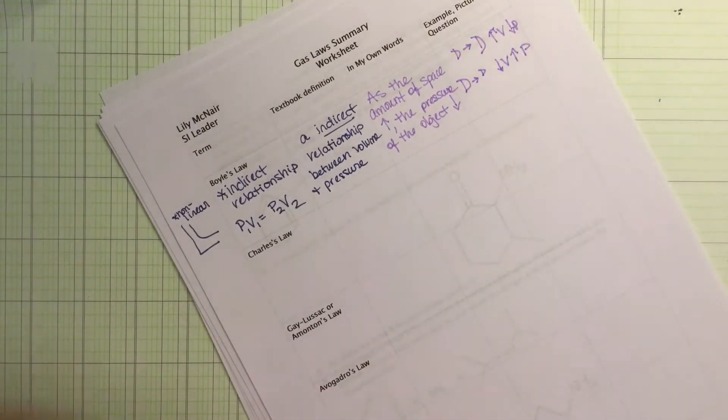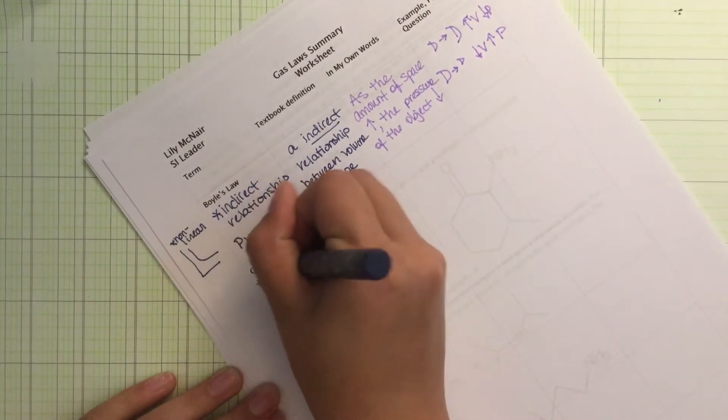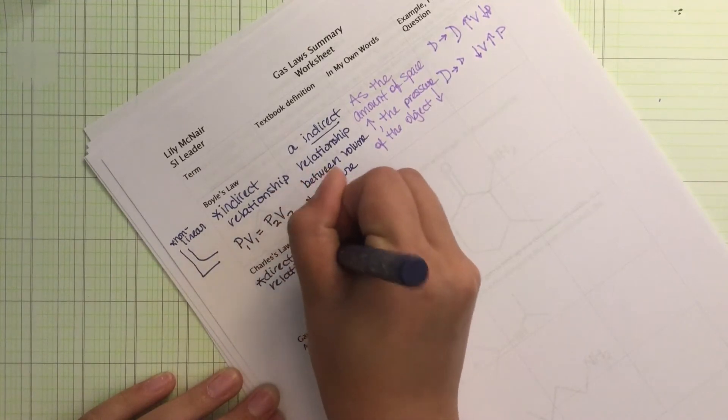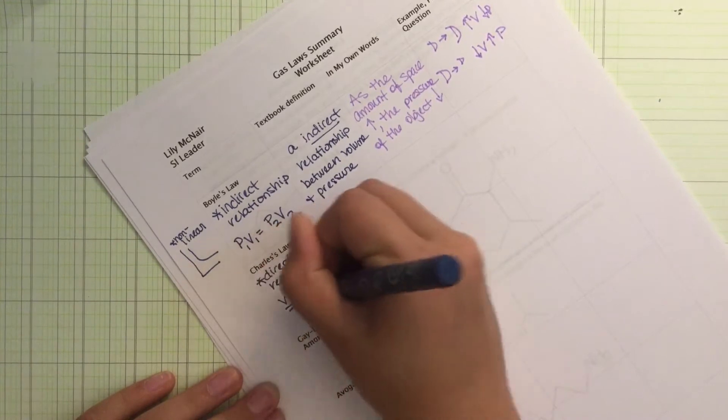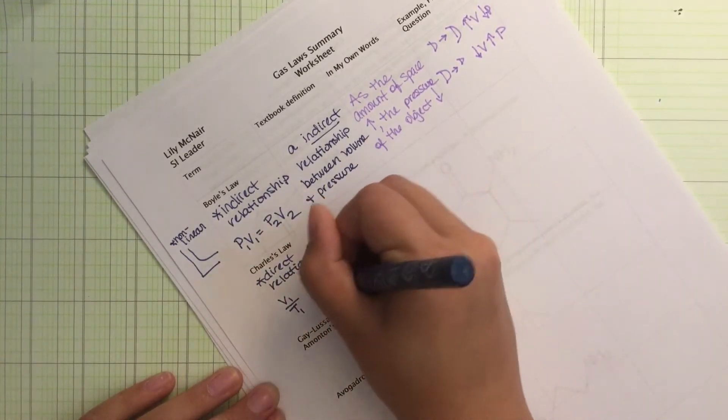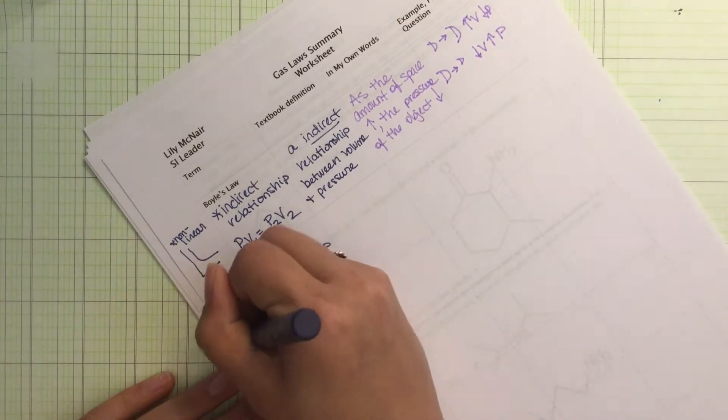Then we have Charles' Law. Charles' Law, we're having a direct relationship. And we're looking at volume and temperature. So our equation looks like this. V1 over T1 is equal to V2 over T2. And this is a linear relationship. So this is sort of what our graph would look like.